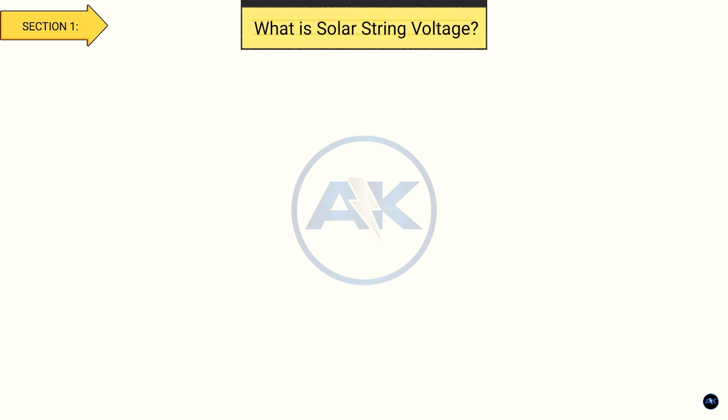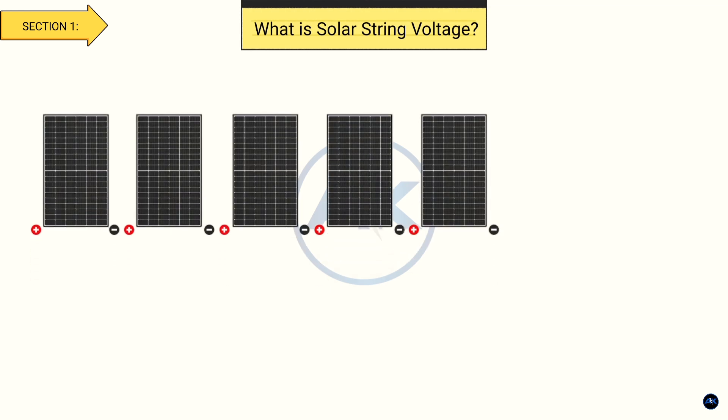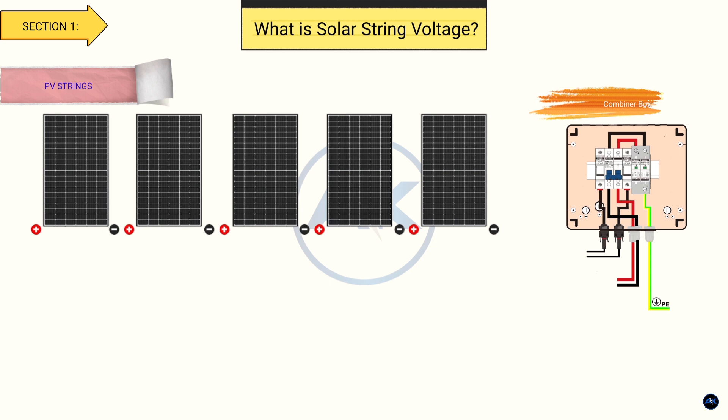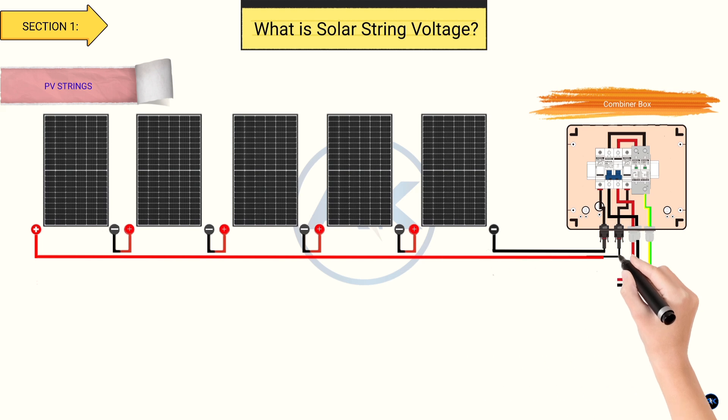Section 1. What is solar string voltage? First, let's talk about what a solar string is. A solar string is a series of solar panels connected together to increase the voltage. When you connect panels in series, the voltage of each panel adds up, while the current stays the same.